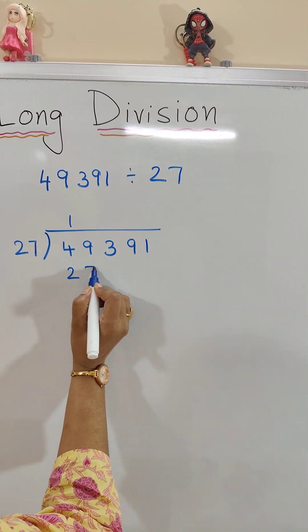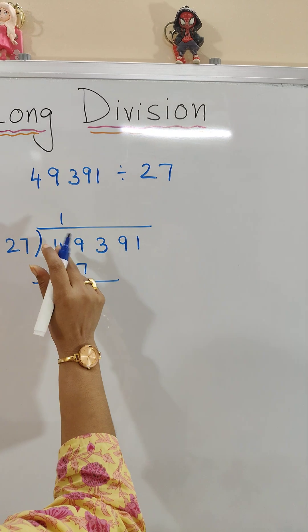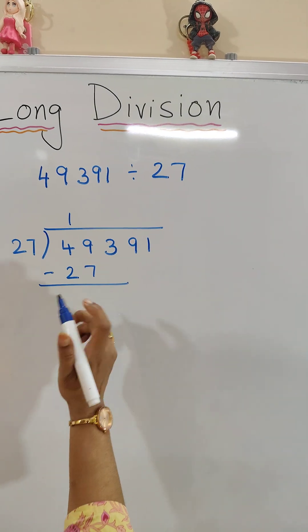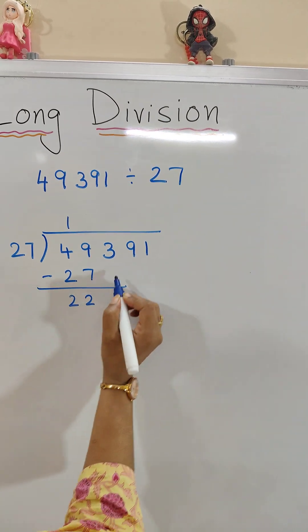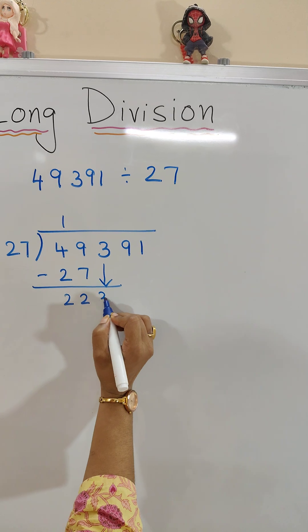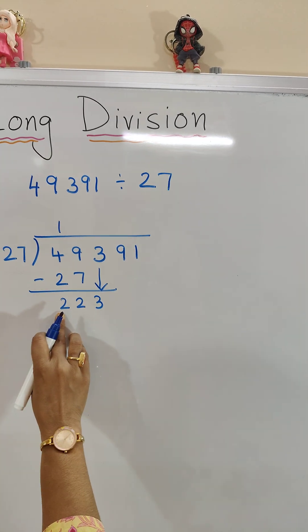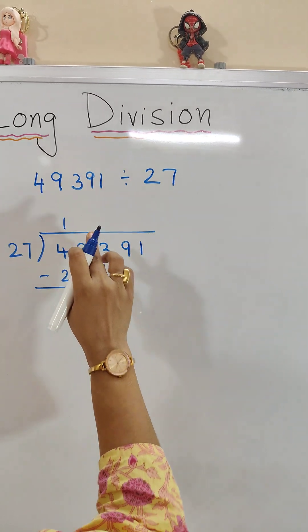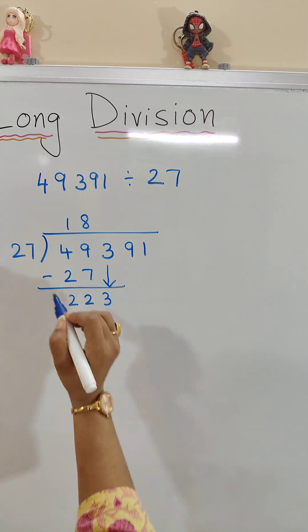Now subtract: 49 minus 27 equals 22. Bring down the 3, so it becomes 223. 27 times 8 is 216.